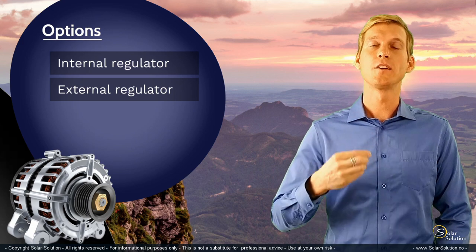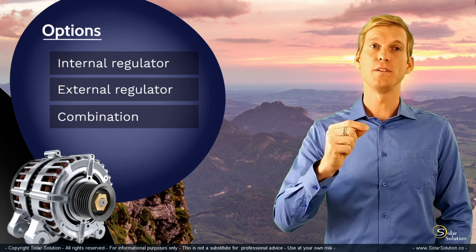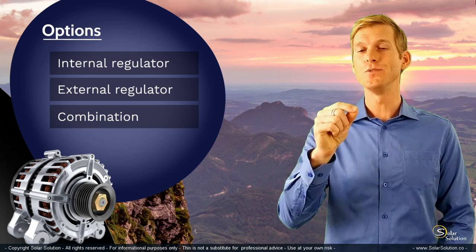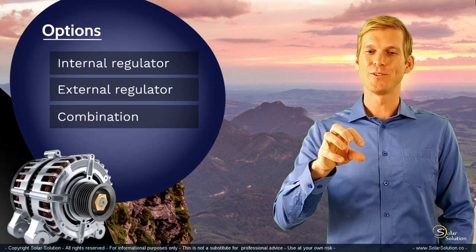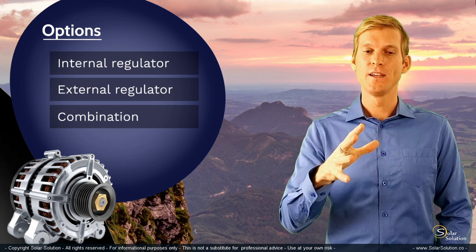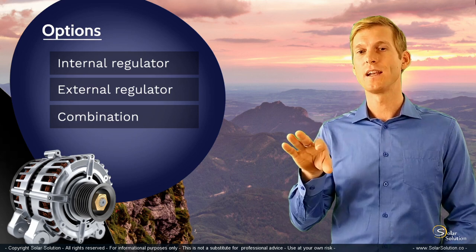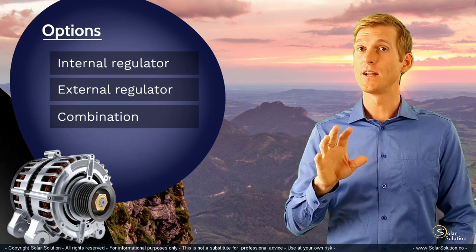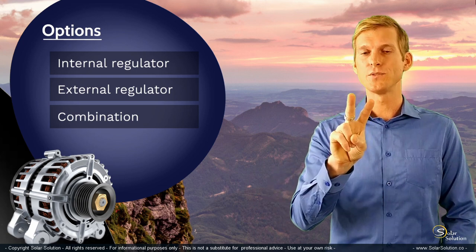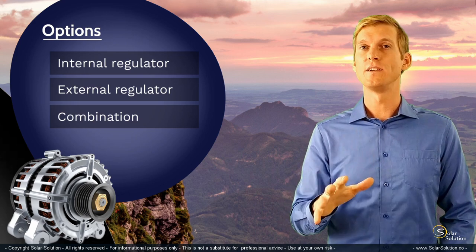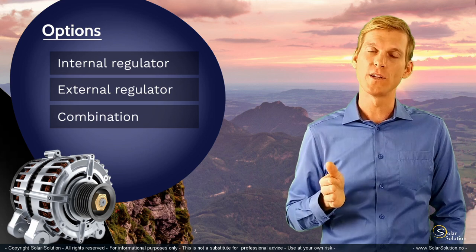I'd also like to point out a third option: the combined use of both an internal and an external regulator. This is a rare situation, but there are two cases where it might be useful. The first is when you want the extra options of an external regulator but don't want the hassle of disconnecting things inside the alternator. Keep in mind you can only combine them if the external regulator is specifically made for this purpose. The second case is if you're concerned about the warranty on your engine or alternator when modifying internal wiring.